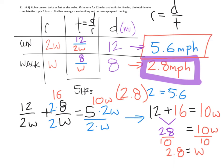Now, you could go back and check. You could say, well, if she was running at 5.6 miles per hour, how long would it take her to run 12 miles? And how long walking at 2.8 miles per hour would it take her to walk 8 miles? And if you combine those, you'd find that you would have 5 hours of both running and walking time.